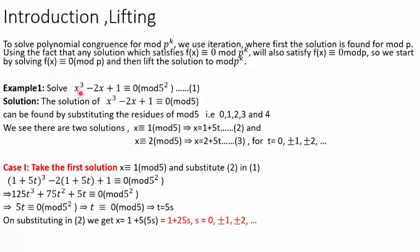What if we are asked to solve x³ - 2x + 1 ≡ 0 mod 5²? You can see here p is 5, we take p to be some prime integer. This is our f(x). So, we start by taking modulus 5 and look for its solutions. You will get two solutions: x = 1 and x = 2.